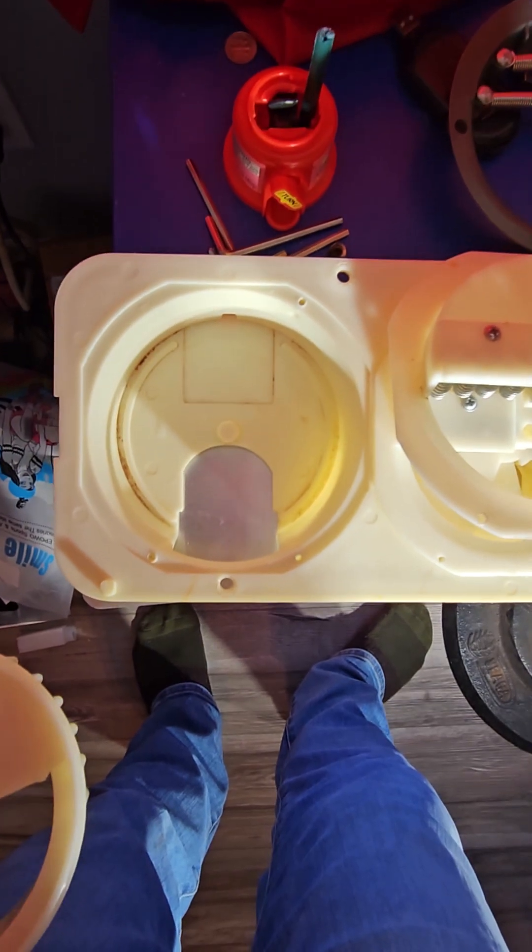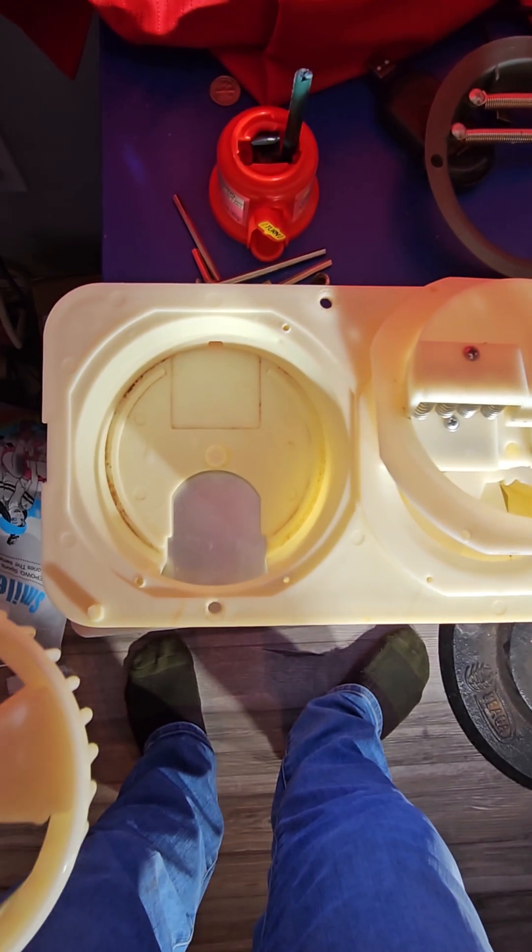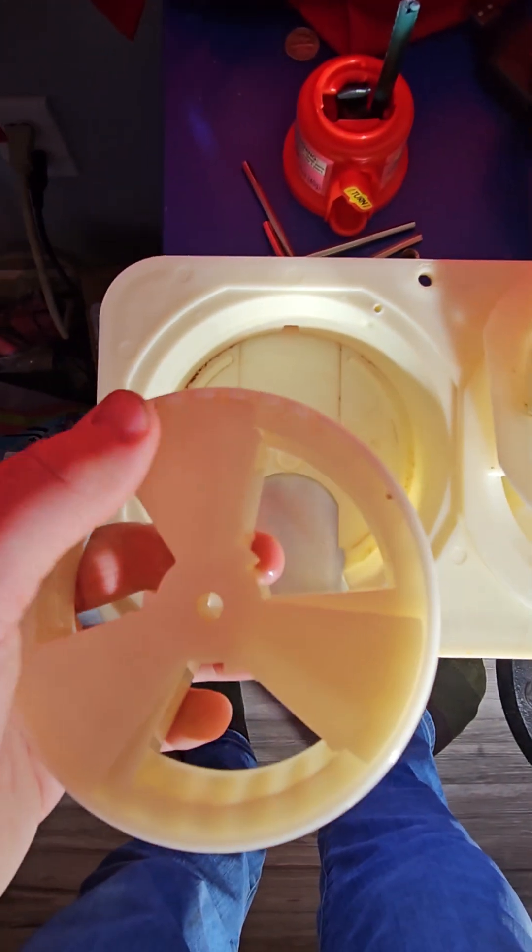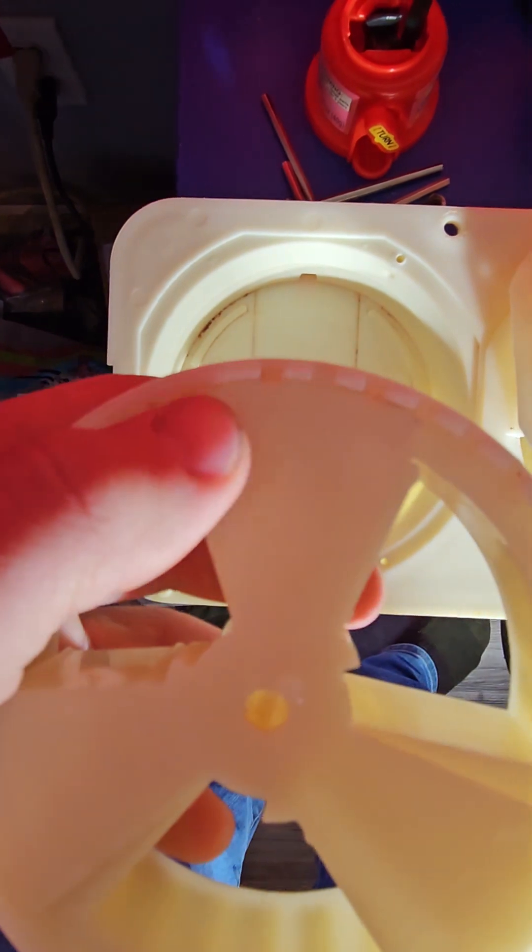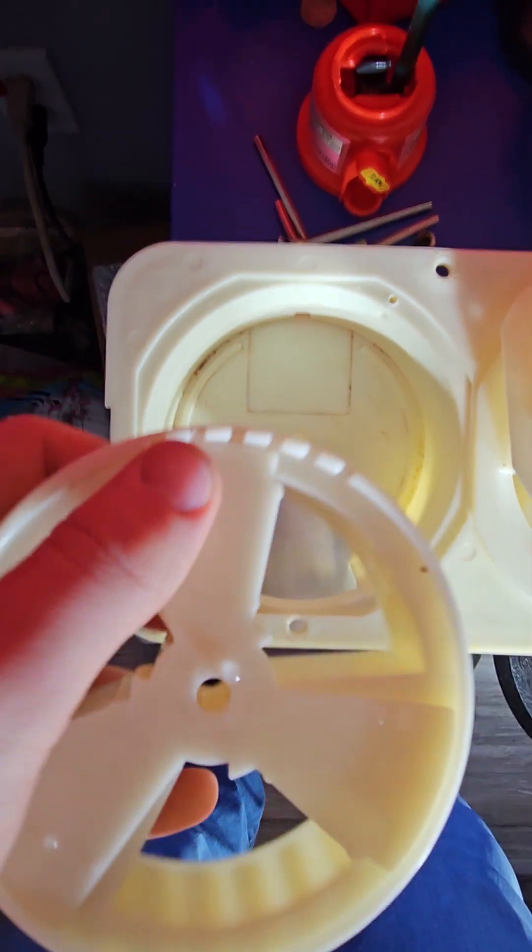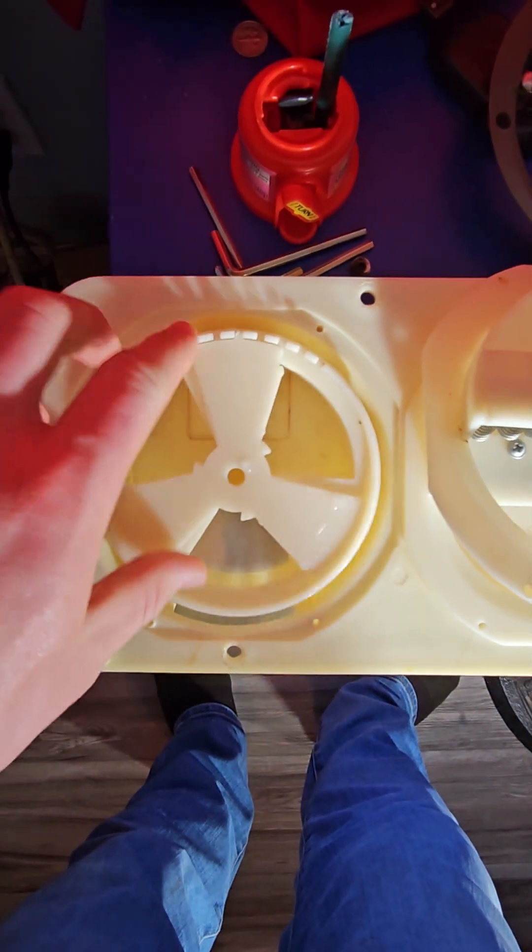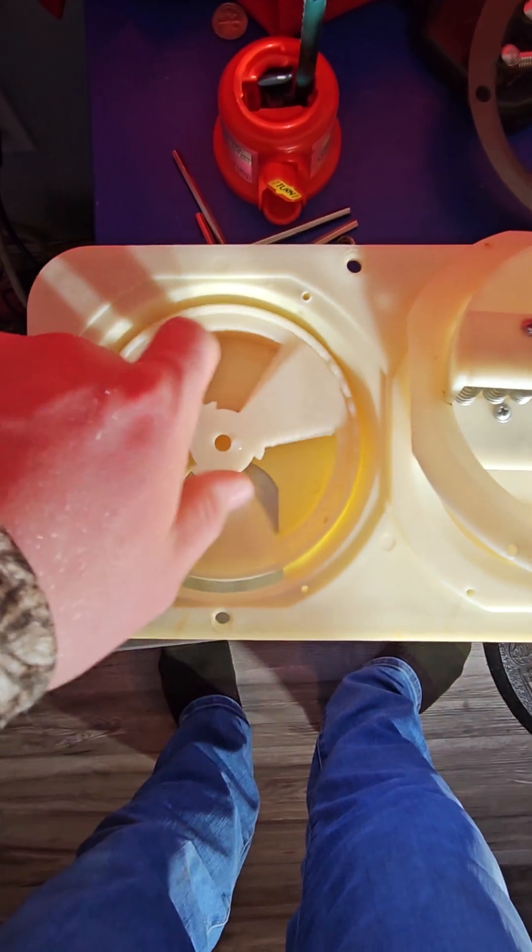All right, so putting the candy wheels back together. You want to get your candy wheel and then your candy divider. You want to line that notch up to how much candy you want to be in it. Just set it down in there to where it spins really easy.